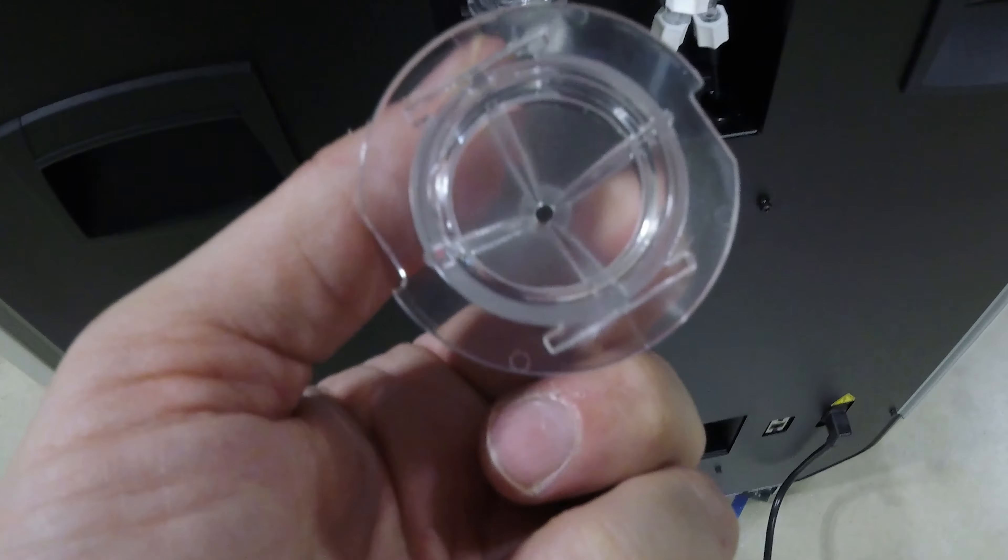If your material is getting snagged and you keep getting pauses while you're printing, this is one of the first things to check, especially if you've never checked it before. So I'm going to put this back on and install it.